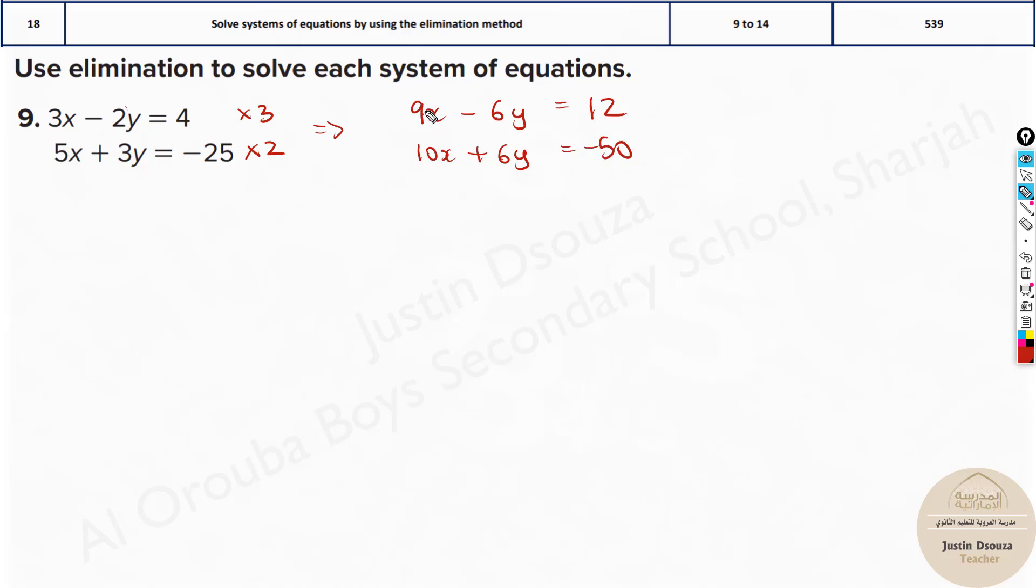Now simplify them. You can't cancel this but you can cancel the y terms. Plus 6 minus 6y is 0, so it's 0y, gone. Now what remains over here, you just add them up. 9 plus 10 is 19x, and minus 50 plus 12 is 40 minus 2, it's 38 but minus sign because 50 is having negative. Now divide both the sides by 19 and you're going to get x equals minus 2. That is the first answer, the x value we found out.